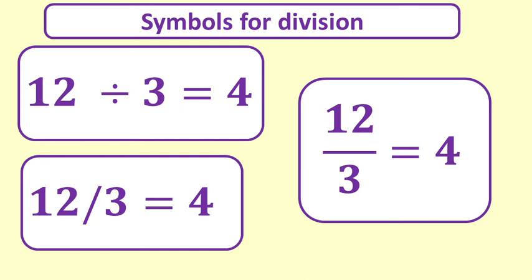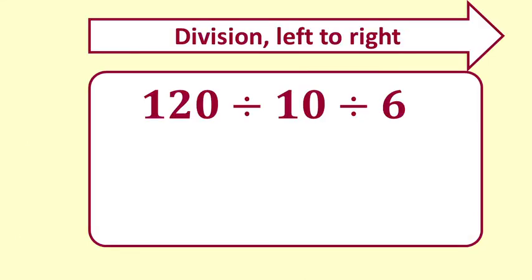Here is an example of division. 120 divided by 10 divided by 6 equals 12 divided by 6 which equals 2. Division can get trickier but we will leave it here for now.